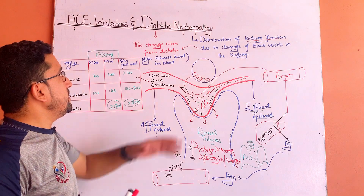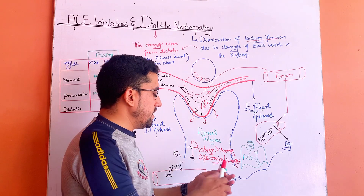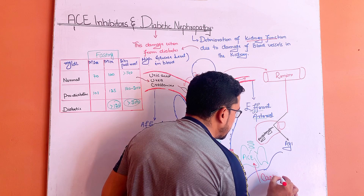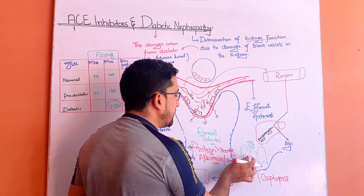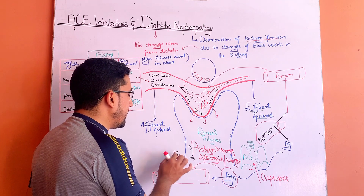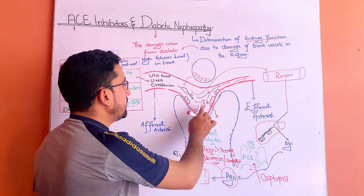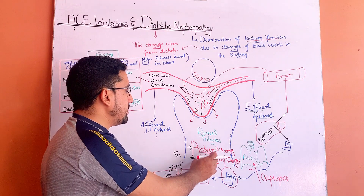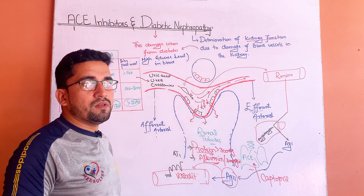So to avoid diabetic nephropathy, we use angiotensin-converting enzyme inhibitors. Captopril is the first FDA-approved drug in this class. When we use captopril, it blocks the angiotensin-converting enzyme so that angiotensin-2 will not be produced. As a result, it will not act on the angiotensin-1 receptor, and vasodilation will occur. Due to this vasodilation, the hyperfiltration rate will become normal, there will be a reduction of proteins and albumins in the urine, and the diabetic nephropathy problem will be resolved.